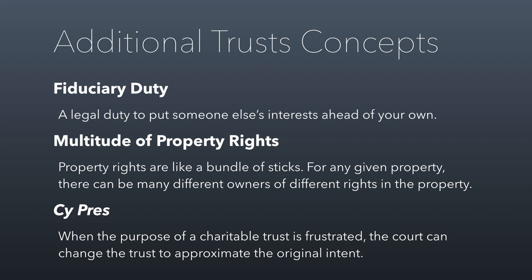The reason trusts work is that law recognizes a multitude of property rights for any given piece of property — different ways to own it. The example used in law schools is that owning property is like holding a bundle of sticks, where you can break apart the bundle and hand different sticks to different people. You might give one person the title, another the right to possess the property, and another the rights to any investment proceeds. In a trust, the trustee is the title owner of the property, but the beneficiaries are the owners of the benefits that come out of the property.